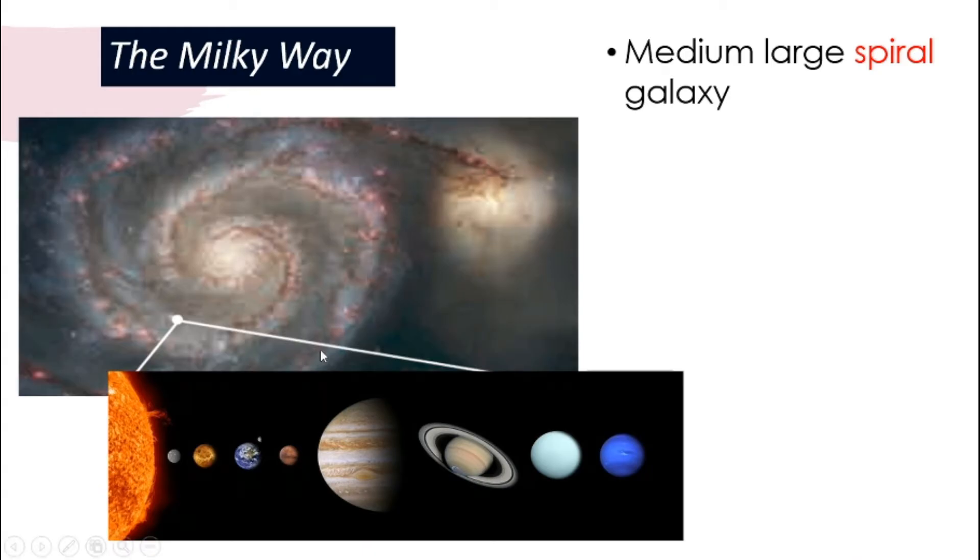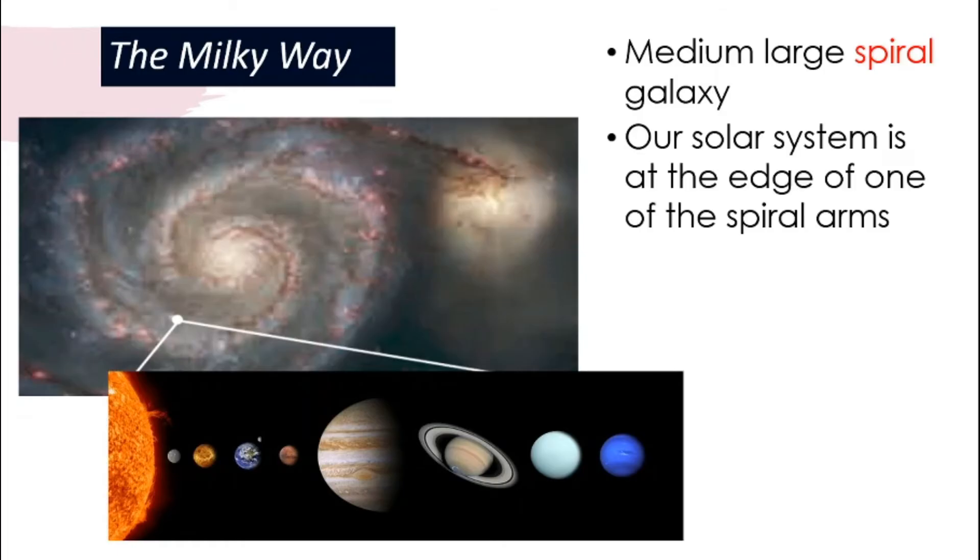Look at this picture. What type of galaxy is the Milky Way? It is a spiral galaxy. The Milky Way is considered one of the medium-large spiral galaxies. It's not very huge, but it is medium large. Our solar system is at the edge of one of the spiral arms, somewhere here as you can see. This is our solar system, here's our mother Earth, and this is the sun.